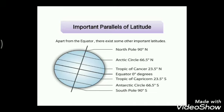Apart from the equator at 0°, there are some important parallels of latitude you need to learn. In the northern side: the Tropic of Cancer at 23.5° North, the Arctic Circle at 66.5° North, and the North Pole at 90° North. In the southern portion: the Tropic of Capricorn at 23.5° South, the Antarctic Circle at 66.5° South, and the South Pole at 90° South. These latitudes help to divide the earth into different zones.